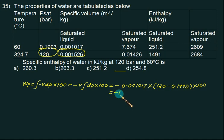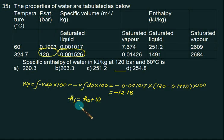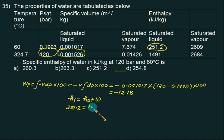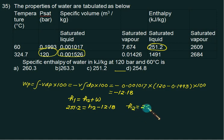From the steady flow energy equation: H1 = H2 + W. With H1 = Hf = 251.2 kJ/kg and W = −12.18 kJ/kg: 251.2 = H2 − 12.18, giving H2 = 263.3 kJ/kg. Choice B is correct.